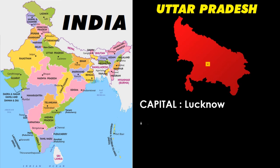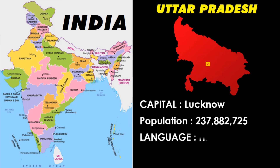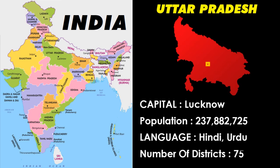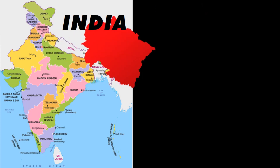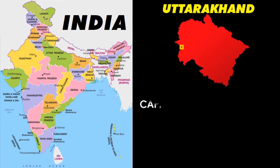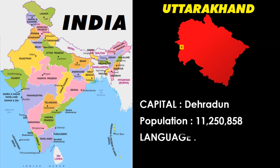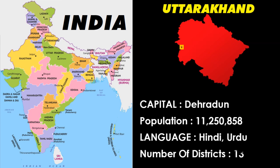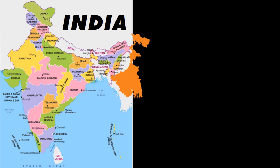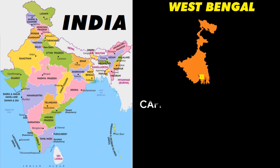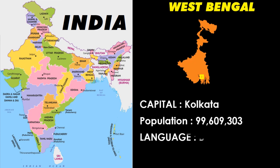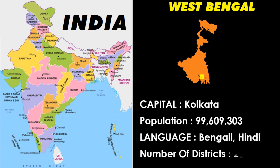Uttar Pradesh: capital Lucknow, language Hindi and Urdu. Uttarakhand: capital Dehradun, language Hindi and Urdu. West Bengal: capital Kolkata, language Bengali and Hindi.